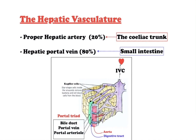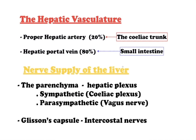Venous drainage of the liver is achieved through hepatic veins, which open into the inferior vena cava. The parenchyma of the liver is innervated by the hepatic plexus, which contains sympathetic fibers from the celiac plexus and parasympathetic fibers from the vagus nerve. These fibers enter the liver at the porta hepatis and follow the course of branches of the hepatic artery and portal vein. Glisson's capsule is innervated by branches of the lower intercostal nerves, and tension of the capsule results in a sharp, well-localized pain.